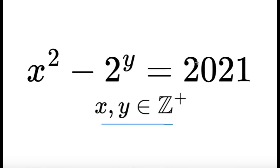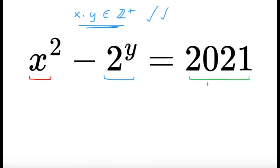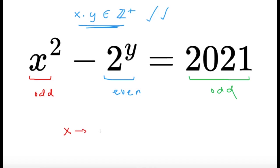This equation is not one of the standard equations you would see, because it's a mix of a quadratic term and an exponent — x squared and 2 raised to y don't really go well together. But we can try to do some analysis by checking the parity of each. Since 2 raised to y has a base of 2 and y is a positive integer, it is even for all positive integer values of y. And 2021 is odd. So since x squared minus an even number equals an odd number, x squared must be odd, which makes x odd as well.